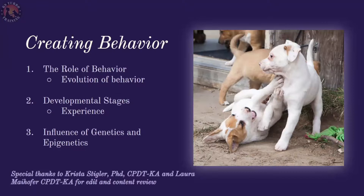We're going to break this down into three areas. One is the role of behavior — a look at the evolution of behavior, what it was created for, what kind of things it can do. Two is developmental stages, the natural stages animals go through that might make them more resilient or faster to pick up on certain types of information. And the last section will be the influence of genetics, including epigenetics, which is some of the newest information we have regarding how epigenetics influence the individual over their lifetime and how some aspects also affect the offspring of that individual over time.